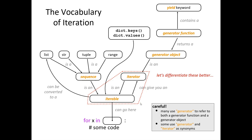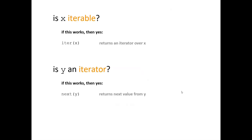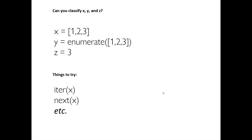Formal definitions: if x is iterable, then iter(x) works — that's the test. If y is an iterator, then next(y) works — that's the test. And if you apply iter() to something iterable, the result is an iterator, so next() will work on it. These two tests are how you formally distinguish iterable from iterator.